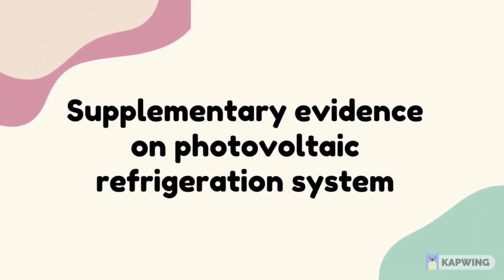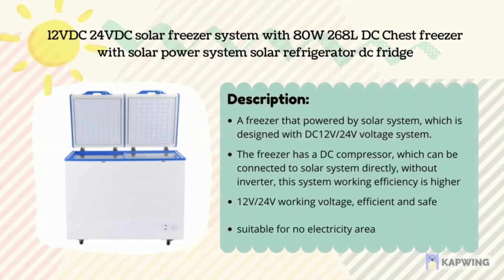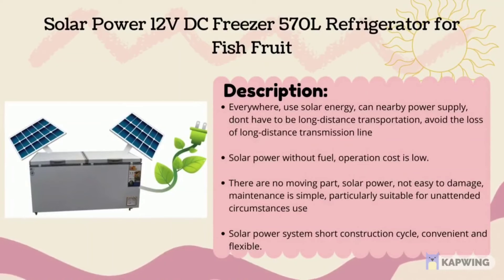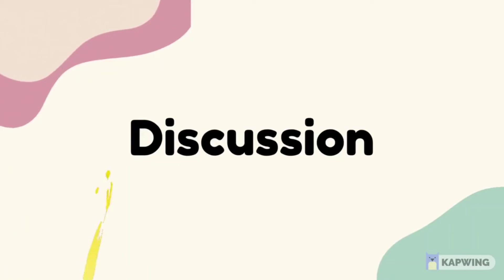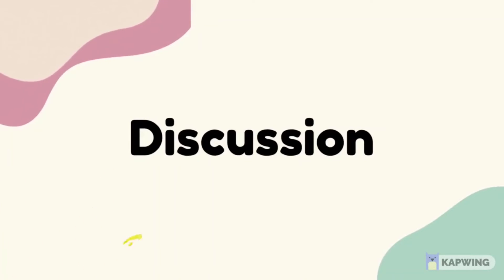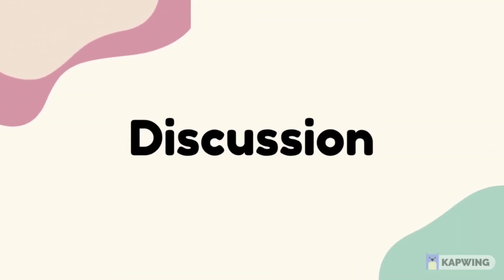There are supplementary evidences on the photovoltaic refrigeration system. Moving to the discussion section, we need to discuss why the company should approve our solar power refrigerator system designed for the Orang Asli community in Perak as part of the CSR program.